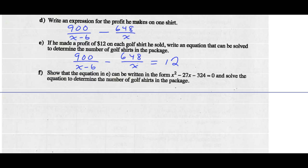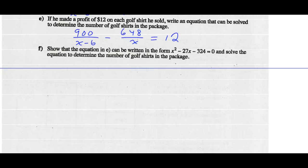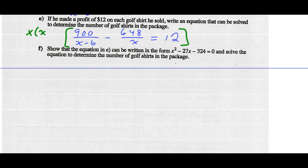Part F: show that the equation in part E can be written in quadratic form and solve it to find the number of golf shirts in the package. Given that equation, I want to multiply the whole equation by the common denominator. My common denominator is X times (X minus six), so I'm going to multiply every term in that equation by X times (X minus six).